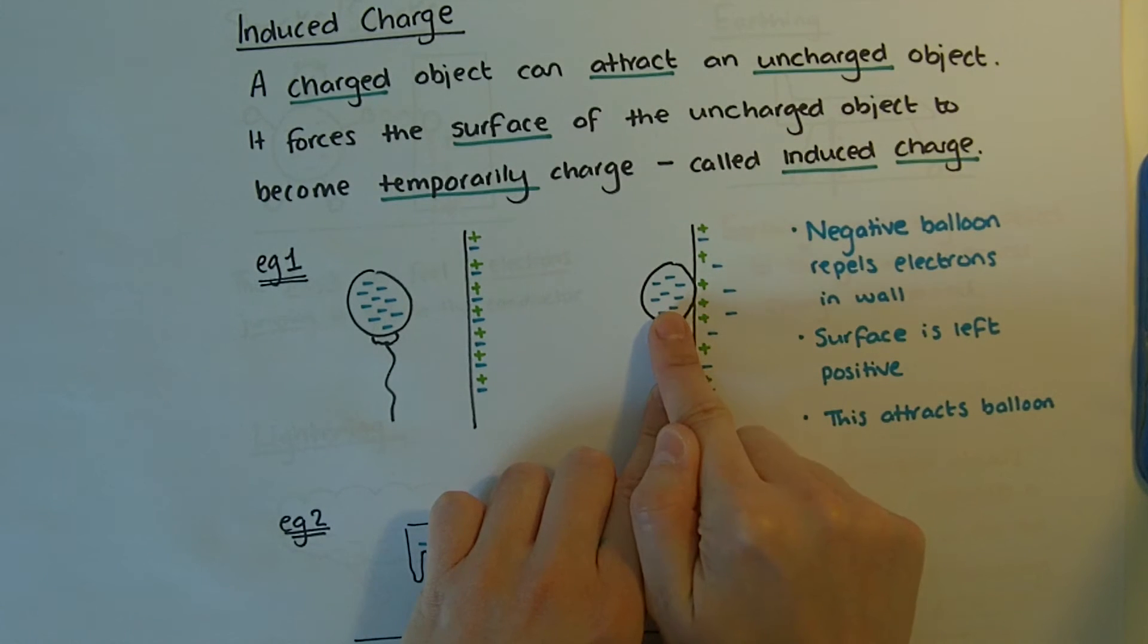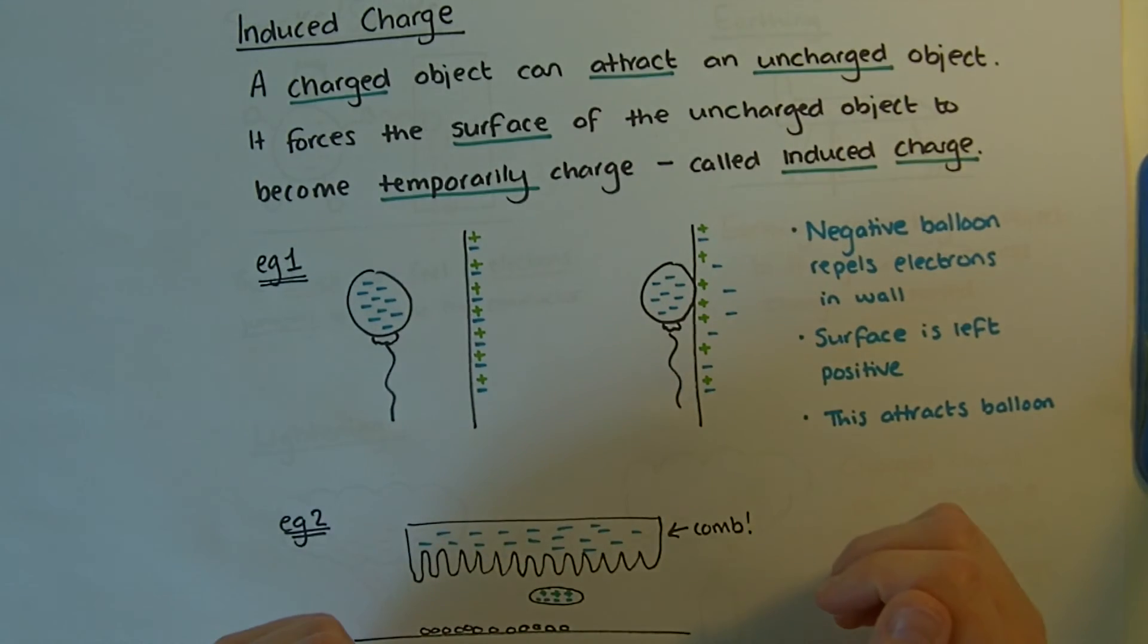That's because they've been repelled by the balloon. This has left the protons at the surface which has made the surface positive. We've forced the wall to become temporarily charged. This is an induced charge. Those positives now attract the balloon and the balloon sticks to the wall.